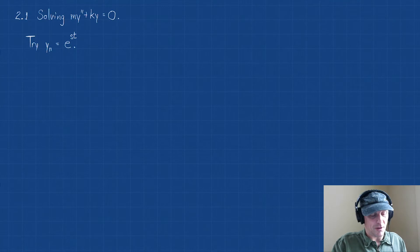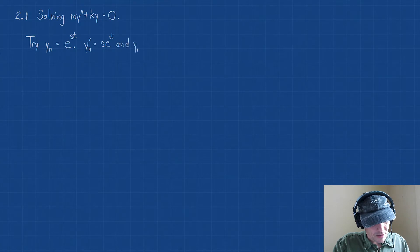What we're going to need in this is we're going to need a few things. We're going to need the second derivative. So y prime: y_n' = s·e^(st). And let's try that again. We need a second derivative. So that's going to be y_n'' = s²·e^(st).